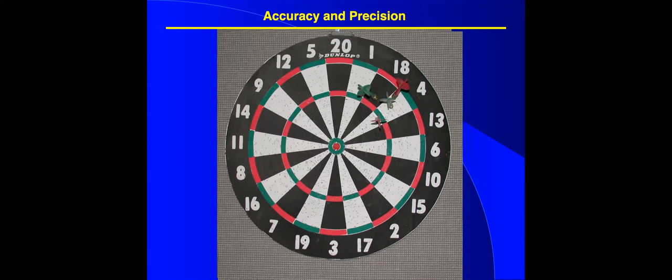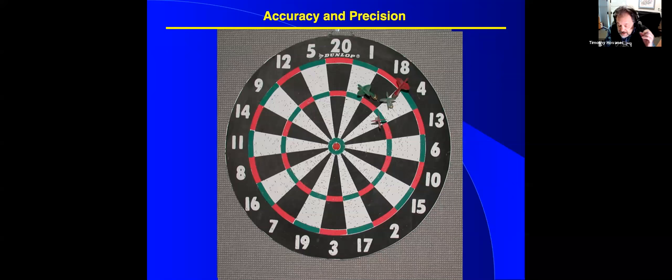In the third case, you have these darts. They're much more closely grouped. But they're not at all near the bullseye. So there, this is the case of, it's not accurate. You're trying to hit the bullseye. But it is precise. If you ran the tests, the darts, say, are a test, you're going to get the same result. It's just the result is wrong.